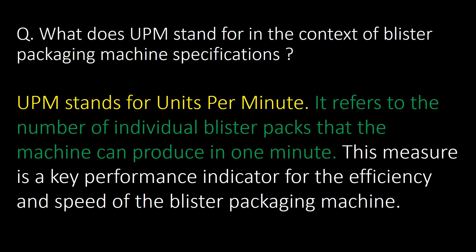What does UPM stand for in the context of blister packaging machine specifications? UPM stands for units per minute — it refers to the number of individual blister packs that the machine can produce in one minute.